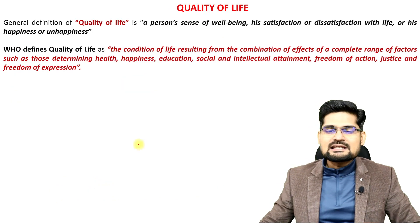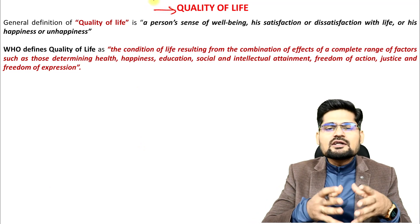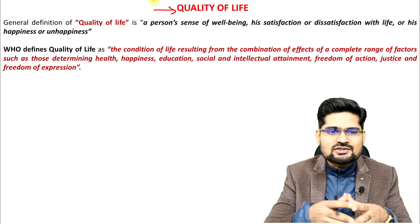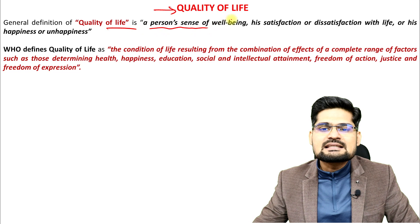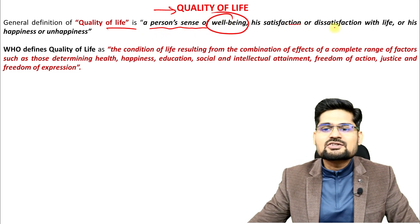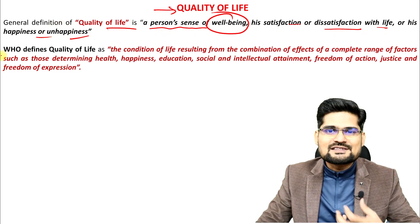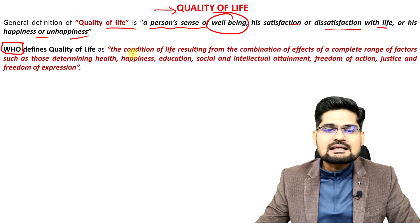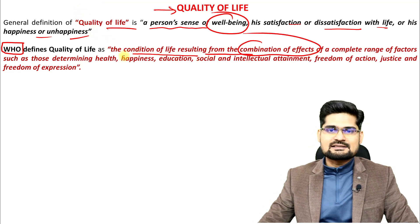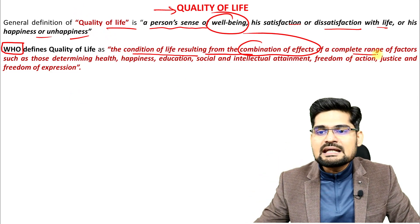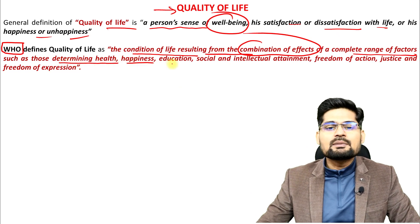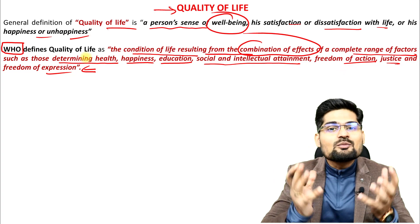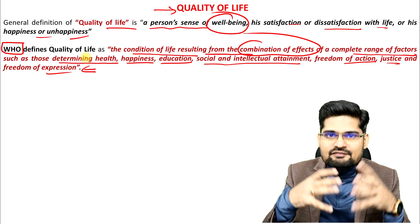The next associated concept is quality of life (QOL), which is a very important indicator for social well-being. Quality of life is generally understood as a person's sense of well-being — their satisfaction or dissatisfaction with life, happiness or unhappiness. The World Health Organization defines it as the condition of life resulting from a combination of effects of a complete range of factors such as health, happiness, education, social and intellectual attainment, freedom of action, justice, and freedom of expression.